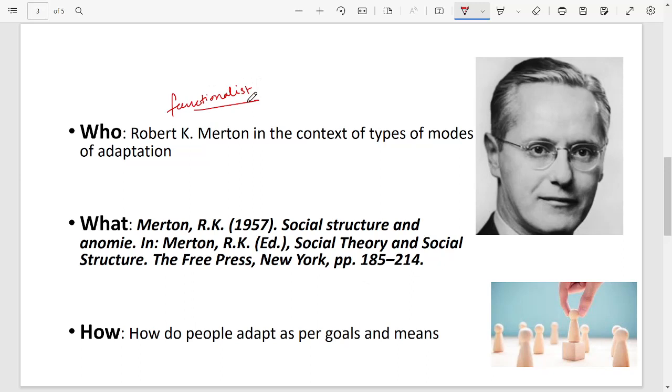However, you need to remember that he was the only functionalist who criticized a lot of previous functionalists before him. In case they ask you where to find Merton's strain theory of deviance or the modes of adaptation theory, remember it's his famous book Social Theory and Social Structure in the chapter Social Structure and Anomie.